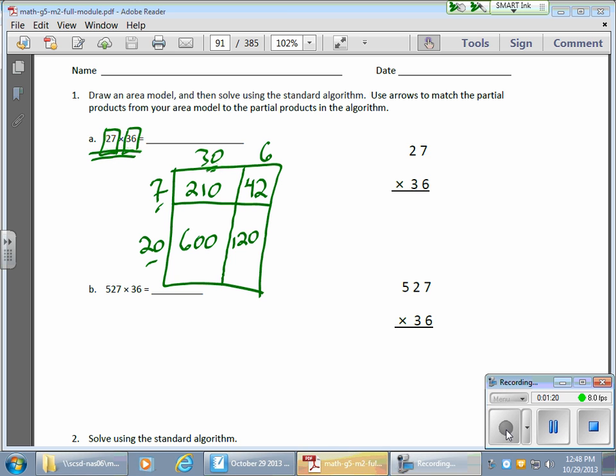My final job here is to add everything up. So I have my 210 plus my 42 gives me 252. And my 600 plus my 120 gives me 720. Now I can bring it down. Add this. There's a 2. There's a 7. There's a 9 for a total of 972.